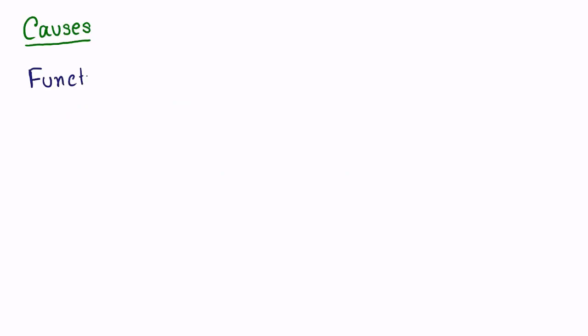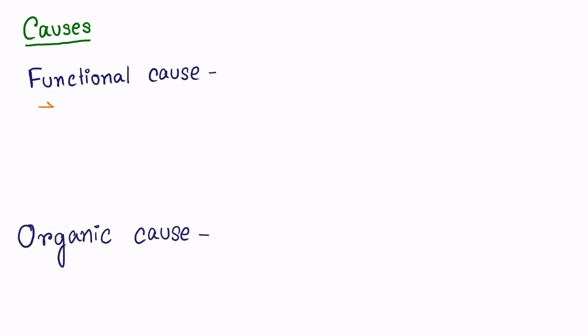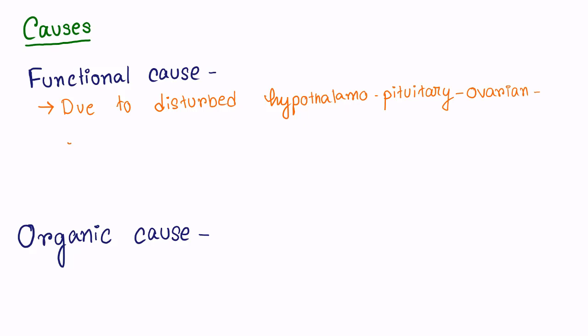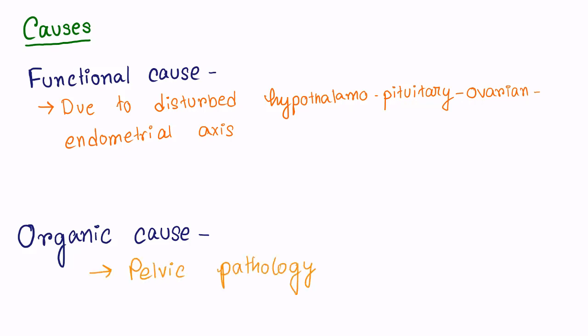Menorrhagia is a symptom of some underlying pathology. It may be due to a functional cause or an organic cause. The functional cause is due to a disturbed hypothalamo-pituitary-ovarian-endometrial axis, which is a tightly regulated system controlling female reproduction. Menorrhagia may result from any defect in this axis, and pelvic pathology is one of the most important causes.